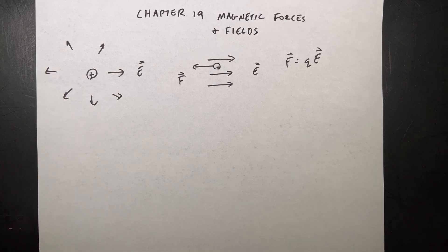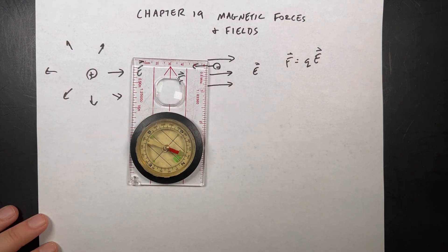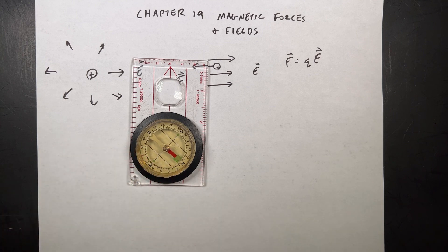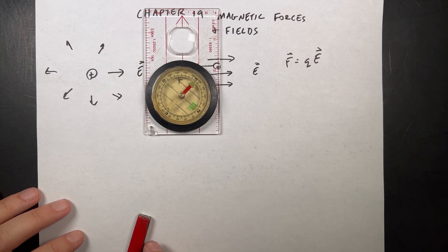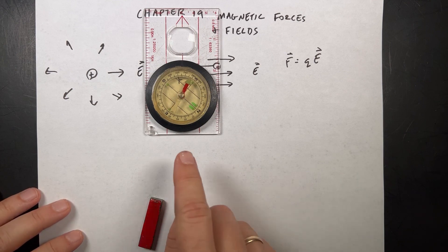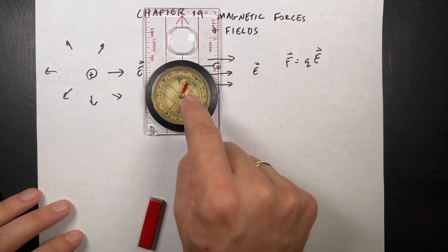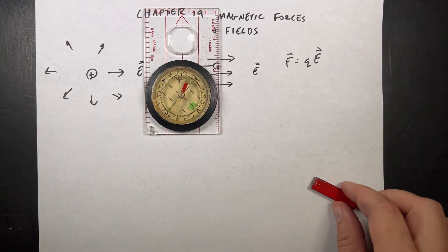The book does things a little bit differently, but I want to start off with a demo. This is a magnetic compass — that way actually is north. A magnetic compass is a magnet. I have here a bar magnet, and you can see that this bar magnet does something to the compass. So we could say this bar magnet creates a magnetic field, and this magnet in the presence of a magnetic field experiences some interaction — and that's kind of cool.